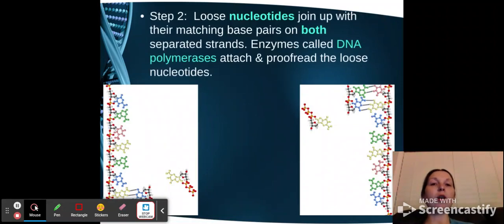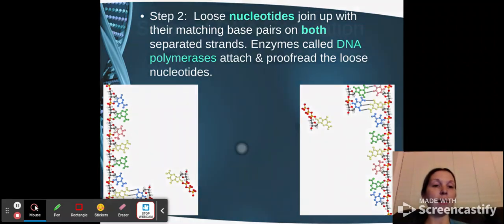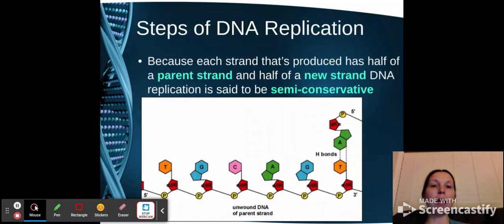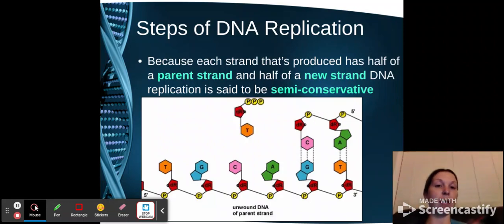So they will have loose nucleotides that will join up with their matching bases on both of the separate strands. When that happens, an enzyme called DNA polymerase will attach and proofread the loose nucleotides. So that's going to actually come back and re-zip the DNA. If a nucleotide has come in and it is lining up correctly with its partner and it's attaching the right way on the strand itself for the backbone, polymerase will come in and zip it back up. Because each strand has produced or was half of a parent strand and half of a new strand, the DNA replication is said to be semi-conservative because it conserved half of the original strand that we used.